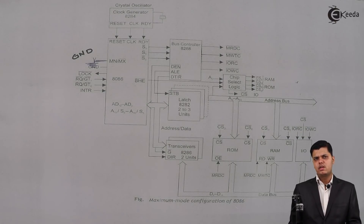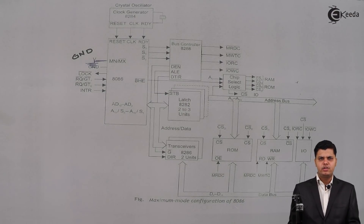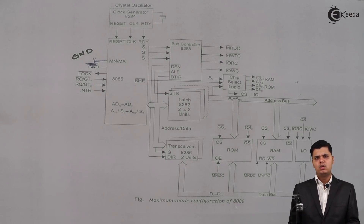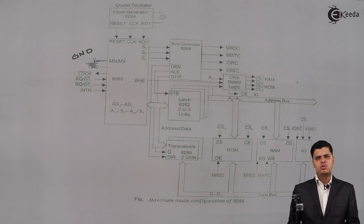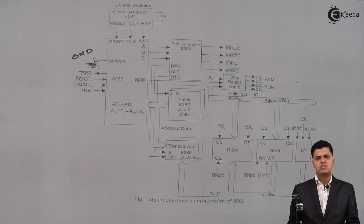Hello friends, in this lecture we are going to see the memory read and memory write cycle for the 8086 microprocessor in maximum mode. In the pin diagram of 8086 microprocessor we have discussed minimum and maximum mode. In minimum mode it is a single processor mode and in maximum mode the system consists of a multiprocessor system consisting of a number of microprocessors.